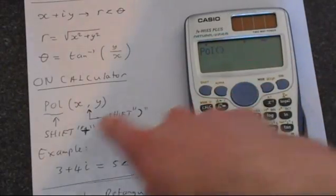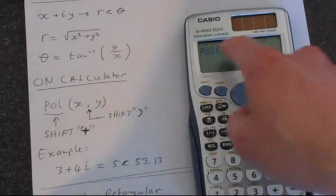And then you need to put in here x, y. There's a comma button on the calculator.